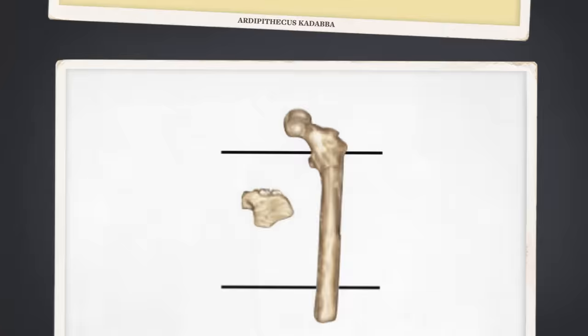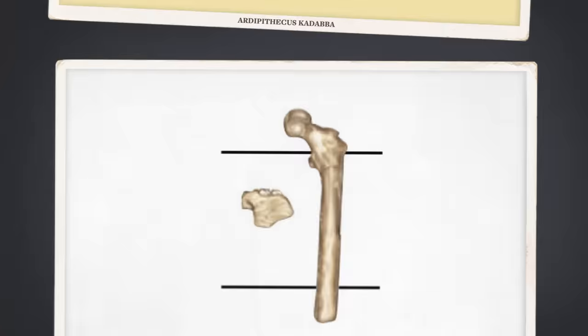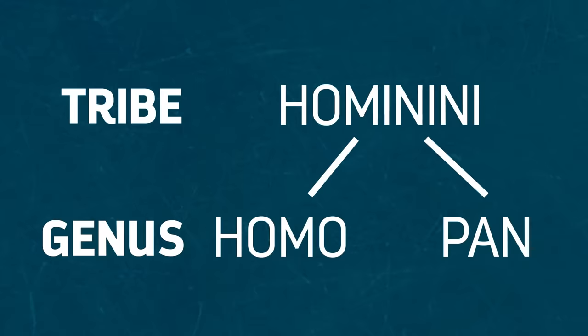And there are three main contenders for the earliest known hominin. Sahelanthropus tchadensis at around 7 million years old, Orrorin tuganensis at about 6 million years old, and Ardipithecus kadabba between 5.8 and 5.2 million years old. Around this point in our family tree, you'll note that our ancestors are still looking more like you than like Purgatorius.